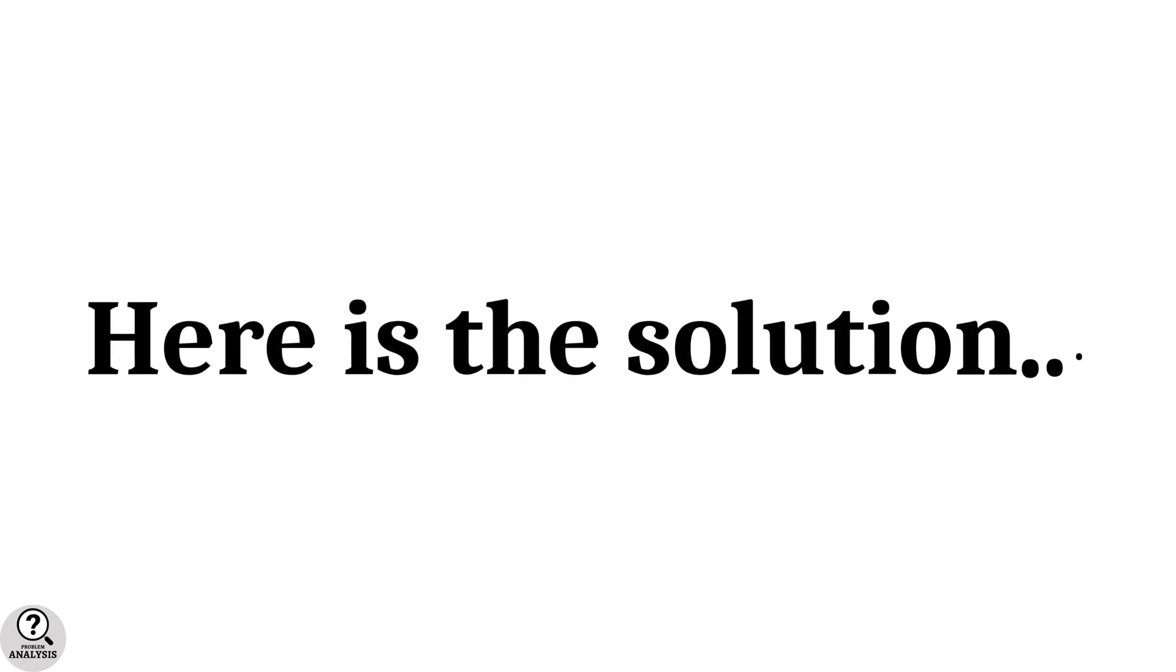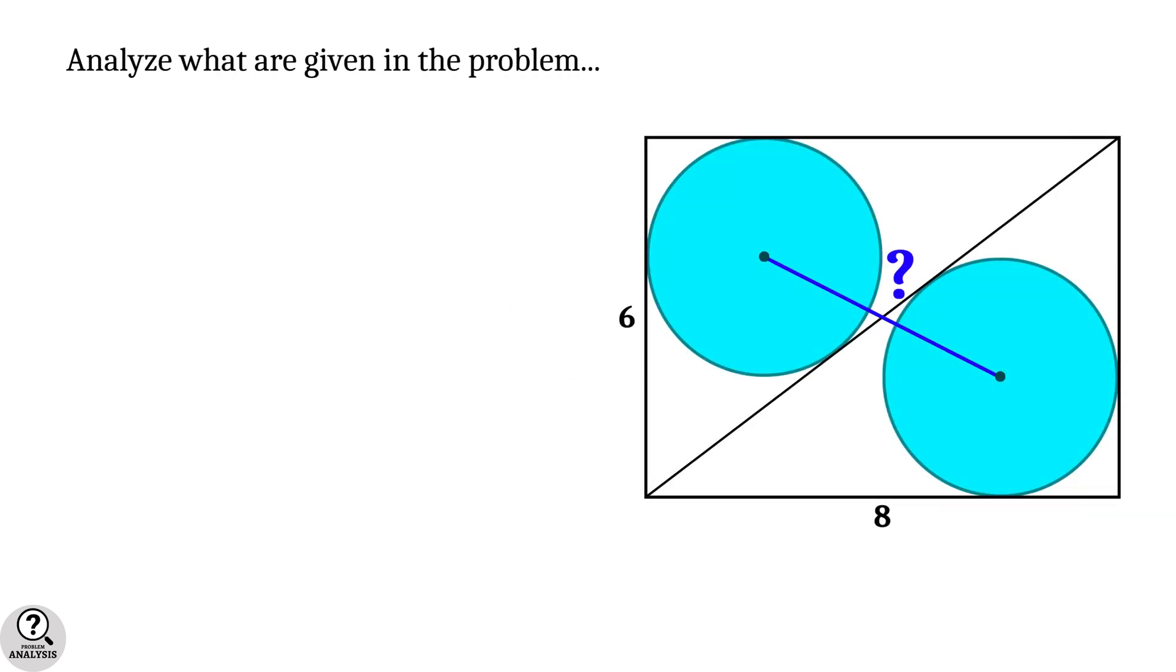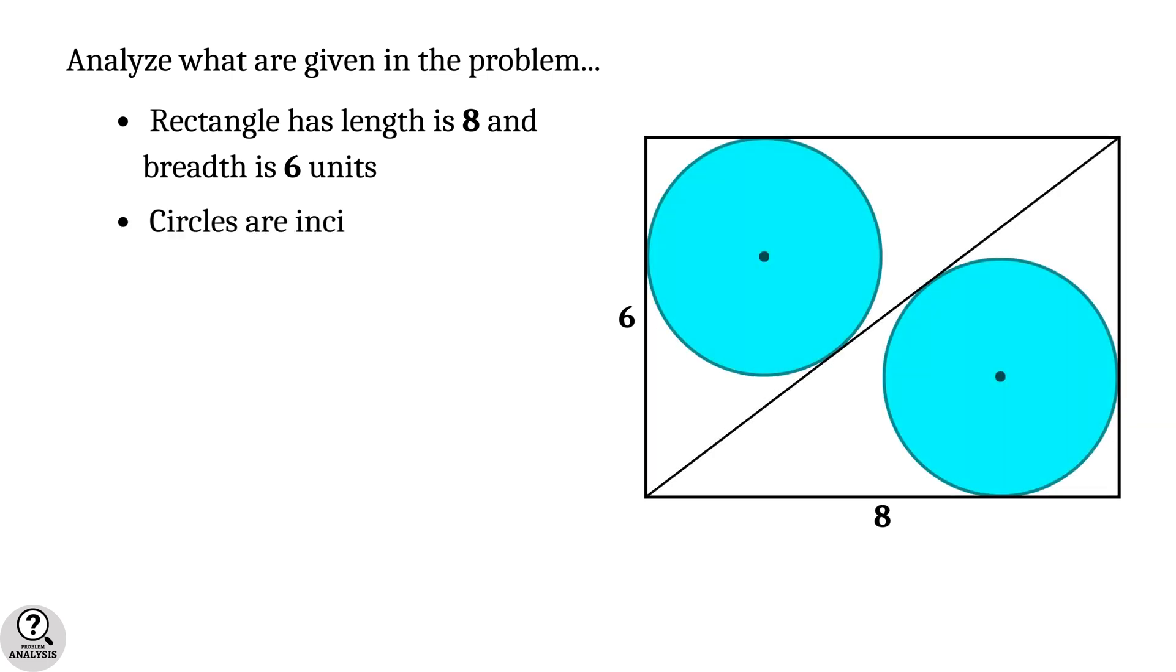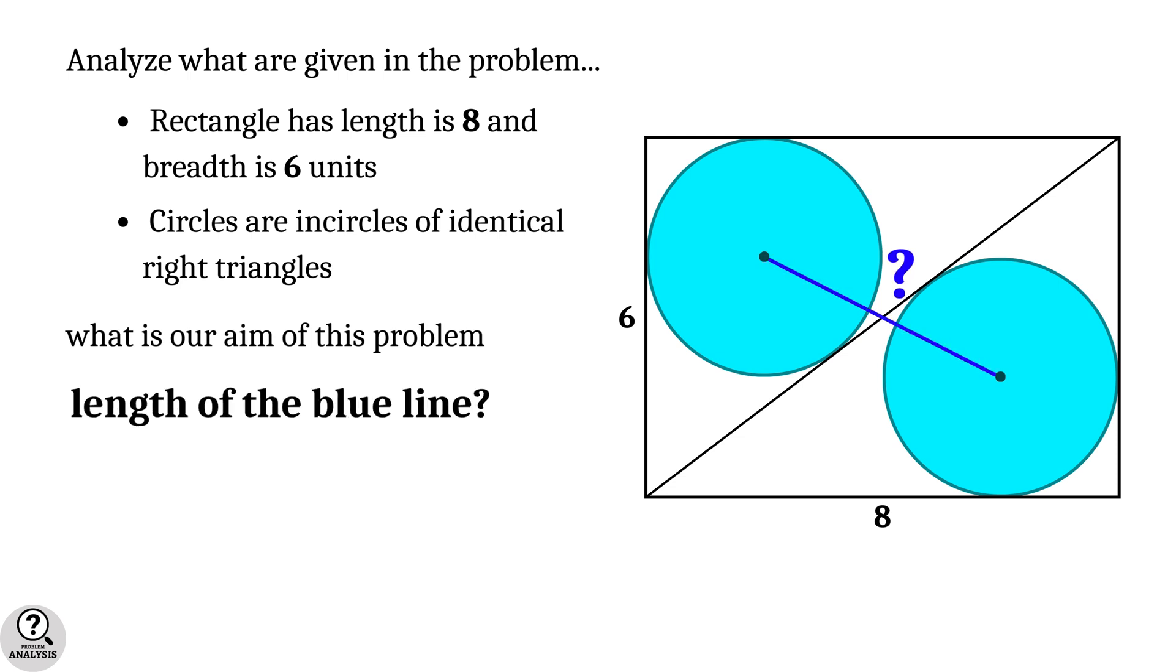The solution is right here. First, let's analyze what is given in the problem. The rectangle has length 8 units and breadth 6 units, and the circles are incircles of identical right triangles. Remember, our aim is to find the length of the blue line. Keep this structure in mind.